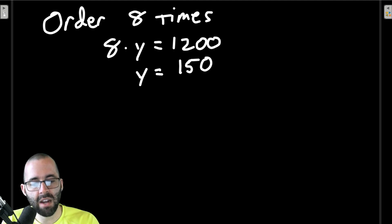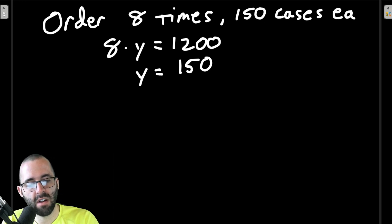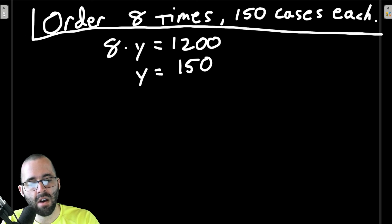We get 1200 divided by 8, which is 150. So 8 orders, 150 cases in each order. That is how we are going to minimize our ordering, delivery, and carrying costs.